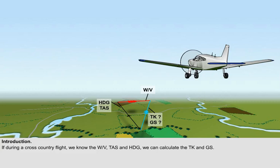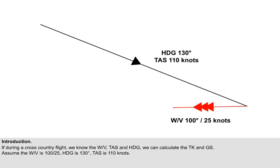If, during a cross-country flight, we know the wind velocity, the true airspeed, and the heading, we can calculate the track and ground speed. Assume the wind velocity is 100 degrees at 25 knots, the heading is 130 degrees, and the true airspeed is 110 knots.